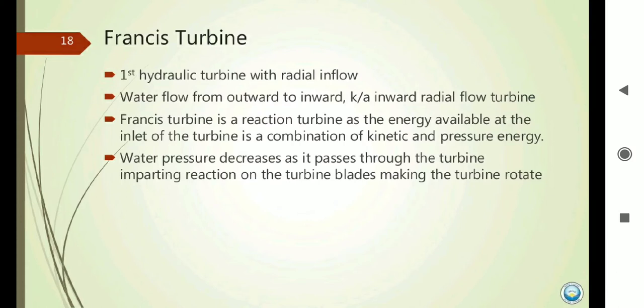Today we are going to discuss about the Francis Turbine. It is the first type of radial flow turbine. Water flows from the outward to inward. Francis Turbine is our first reaction turbine — a turbine where the pressure changes at the blade and also the nozzle. The energy at the inlet is a combination of kinetic and pressure energy. Water pressure decreases as it passes through the turbine, imparting reaction to the turbine blades and making the turbine rotate.